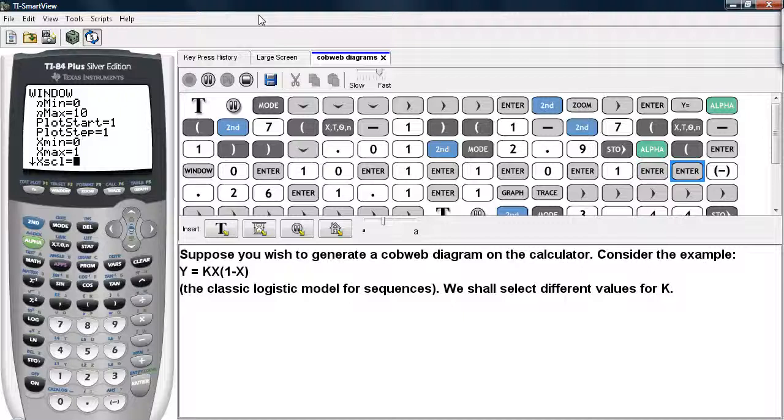Let's keep the scaling at one. We'll set y min to be negative point two six. And we'll set y max to be one point one. And then we'll set the scaling to be one for the y axis.